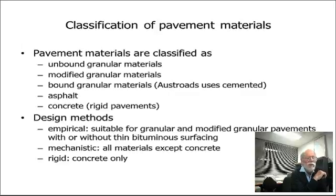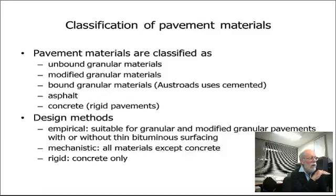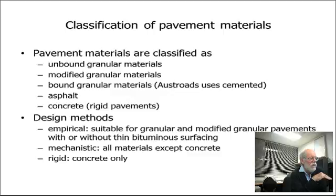Bound granular materials — that's where you do develop tensile stress or tensile capabilities in the material. Bitumen stabilised materials, or cement stabilised materials with a higher proportion of cement, are bound but they're still considered flexible. Asphalt is a bound material but flexible. And concrete is a different one because that's actually classed as rigid — it doesn't flex very much at all.